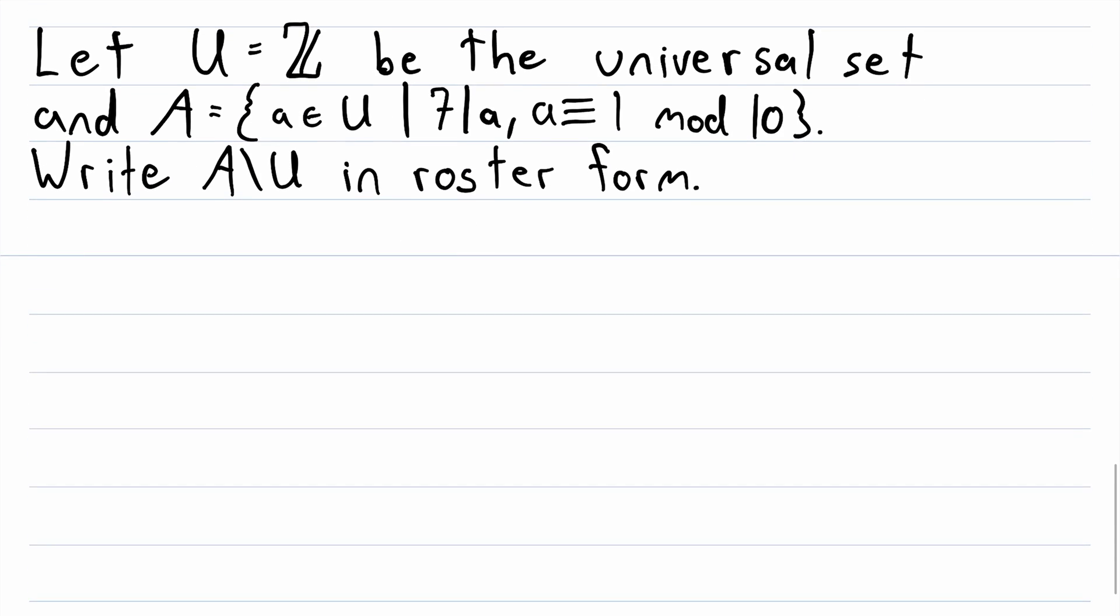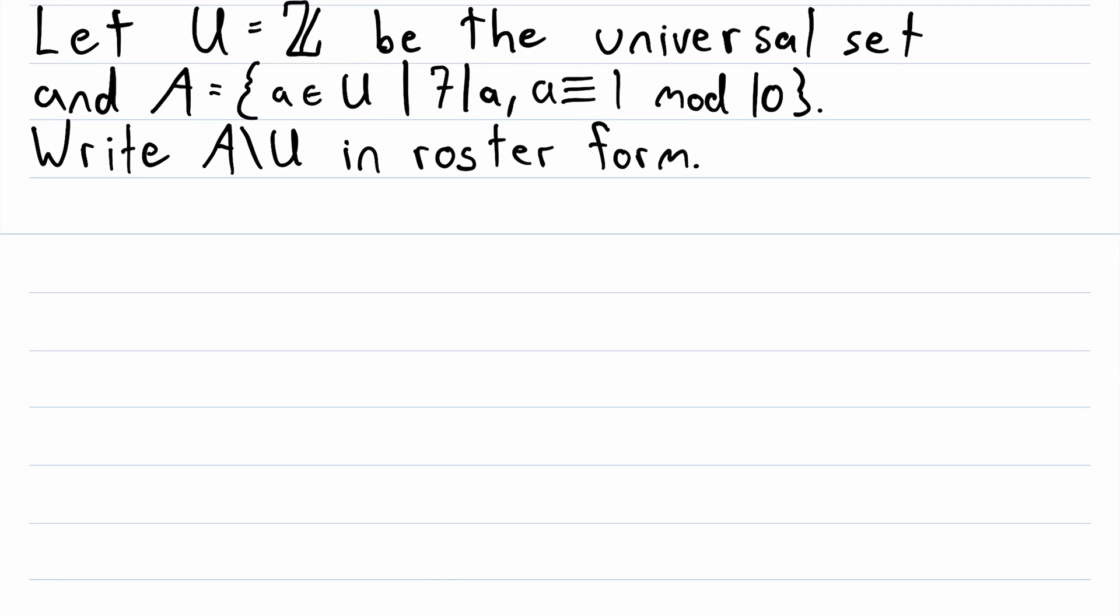And this one's quick and painless, so let's get into it. We're going to let U be equal to the integers, and we're letting that be the universal set. Then, we let big A be the set containing all elements a of U, such that 7 divides every element a, and every element a is congruent to 1 mod 10. And we are asked to write the relative complement of U with respect to A in roster form.